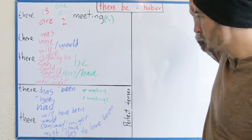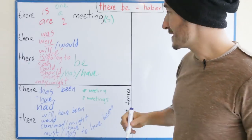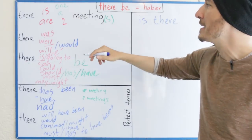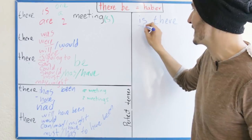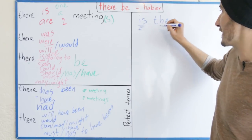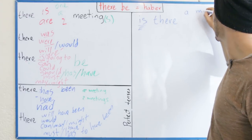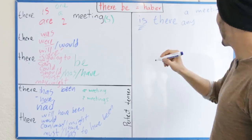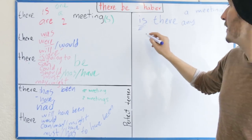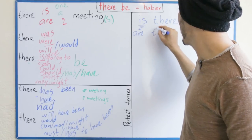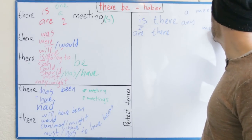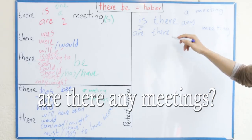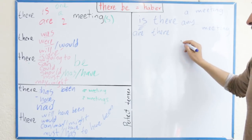En cuanto a preguntas y negaciones, si 'there is' es la afirmación, la pregunta simplemente es cambiar el verbo 'to be' al principio. Lo único que tengo que hacer es poner el verbo 'to be' primero en todos los casos. Entonces: is there a meeting? Y aquí se utiliza el 'any' — is there any meeting? En plural: are there any meetings? No puedo decir 'are there a meeting', pero sí puedo decir are there two meetings.